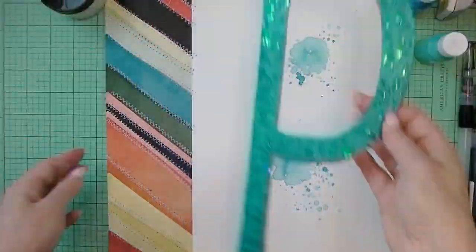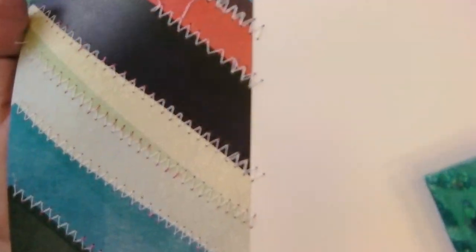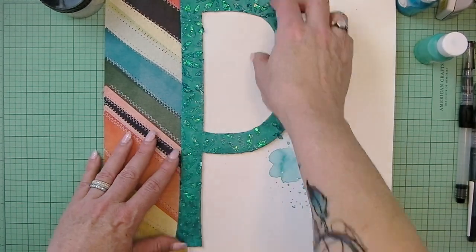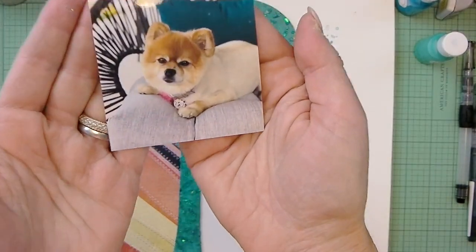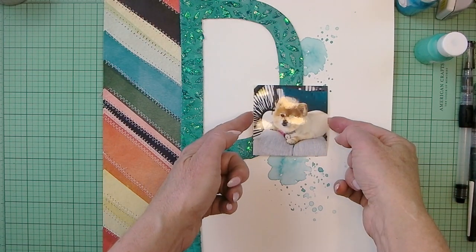Here is the finished chipboard letter, it's all dry and I can move on with the layout. There's my stitching that I've finished, and you see that I want that chipboard letter. There's my photo of Peanut.